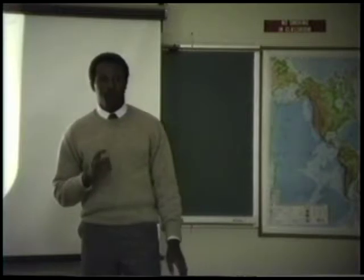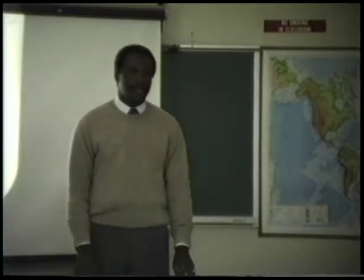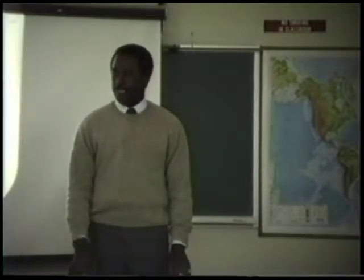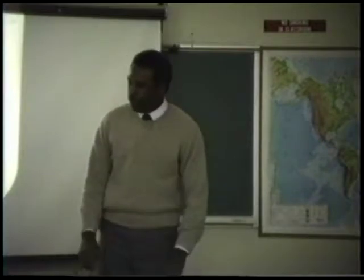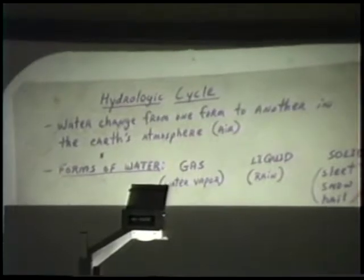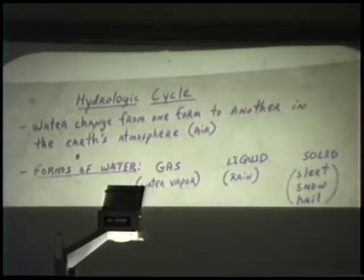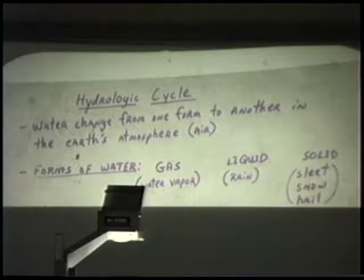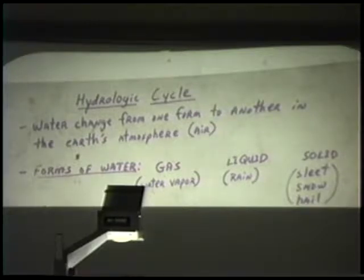In order to understand this, we need to review a number of concepts relating to the change of moisture in the atmosphere from one form to another. I'm going to show you some transparencies with some of these basic terms and concepts. What we're talking about generally is one of the more basic concepts in geography, especially physical geography, and this concept is the hydrologic cycle. The hydrologic cycle describes the way in which water changes from one form to another within the atmosphere.